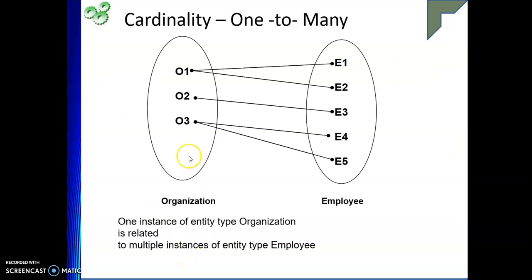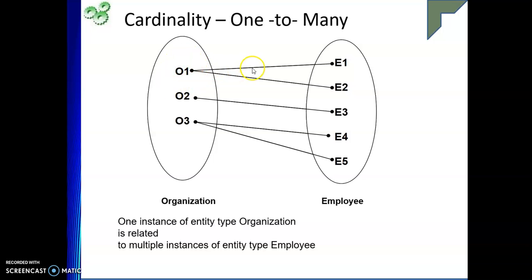Next is one-to-many. Consider organization and employee. One particular organization has many employees: E1 and E2 belong to organization 1, E3 to organization 2, E4 and E5 to organization 3. One instance of organization is related to multiple instances of employee. Many instances of employee are all associated with only one instance of the organization. That is one-to-many.